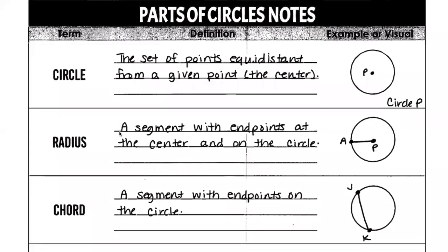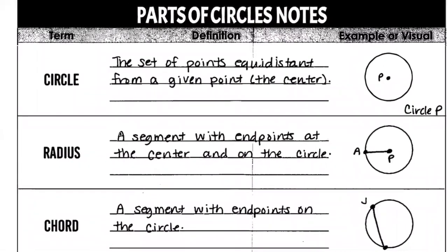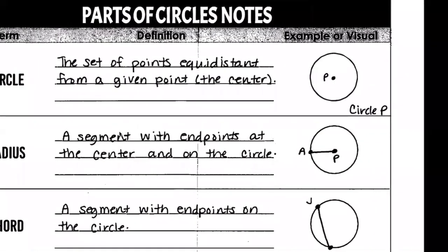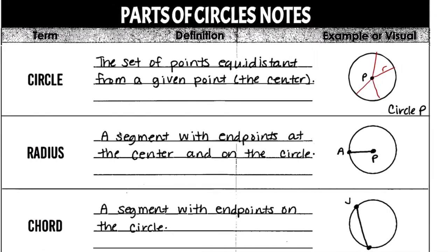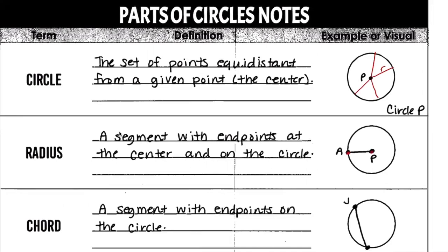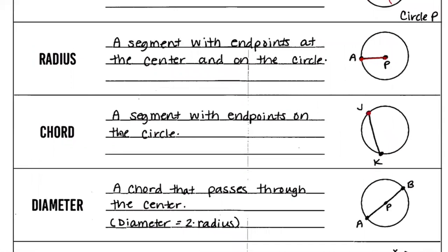Let's go over the vocabulary really quickly. A circle — you might say it's a round thing, but it's really a set of points that is equidistant, or the same distance, from a given center point. Right here we have circle P because point P is the center, and every point on the circle is the same distance from P. We call that distance r, or radius. The radius is a segment from the center to the edge of the circle.